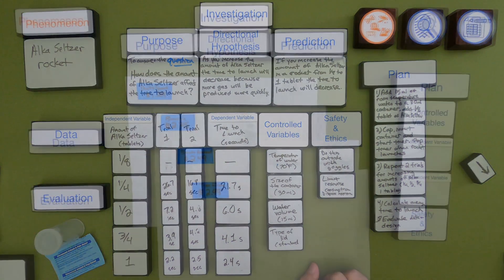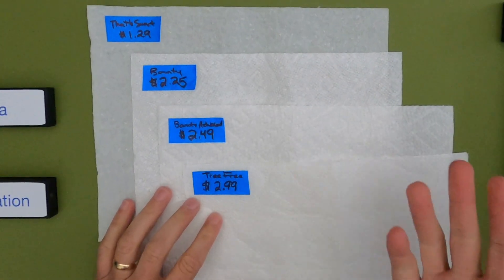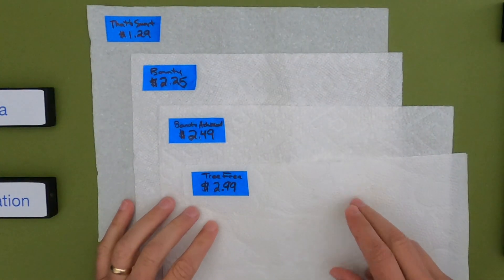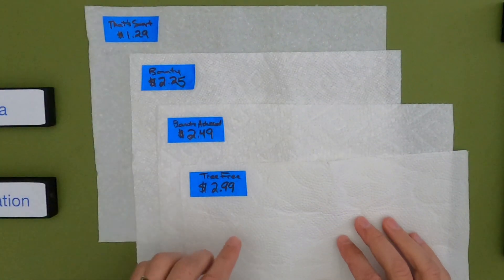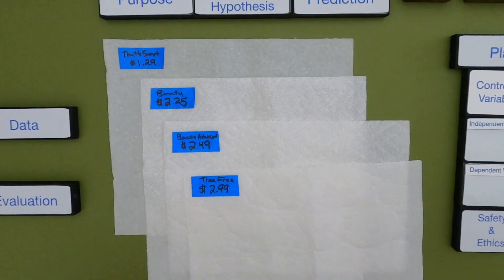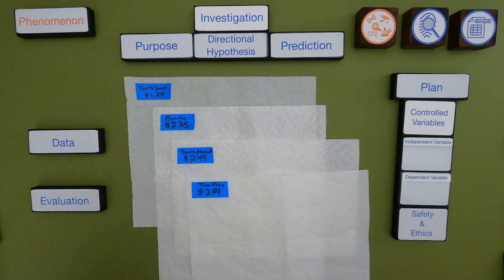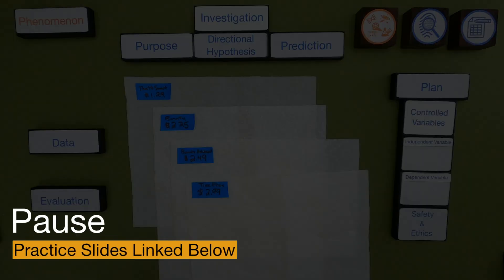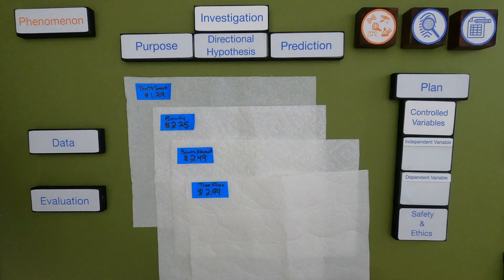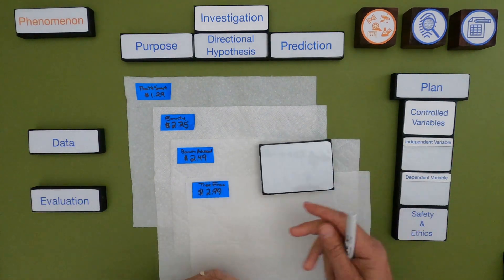For the next investigation we're going to look at paper towels. We went to the store and bought four different types, ranging from a generic store brand at $1.29 all the way up to tree-free bamboo paper towels at $2.99. The first thing we want to do is define the phenomena, purpose, and hypothesis. I'd encourage you to pause the video, come up with an investigation plan of your own, then unpause and let's see how our investigations compare.